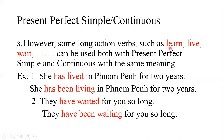Number three: however, with long action verbs such as learn, live, and wait, both present perfect simple and present perfect continuous can be used with the same meaning. Example: 'She has lived in Phnom Penh for two years' or 'She has been living in Phnom Penh for two years' — the same. Also: 'They have waited for you so long' or 'They have been waiting for you so long' — there is no difference.